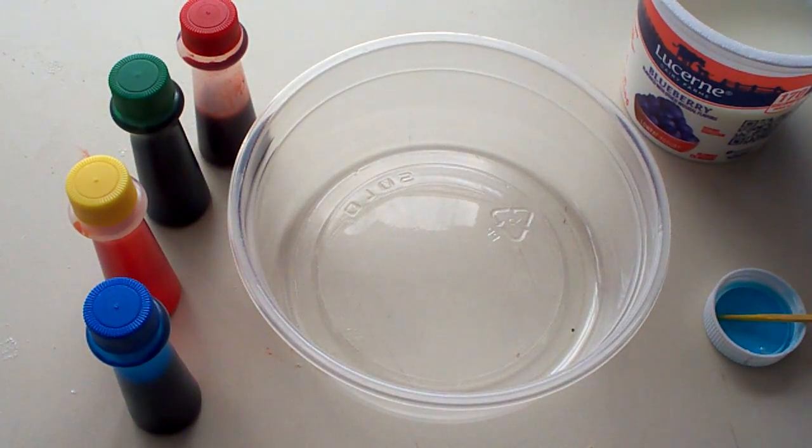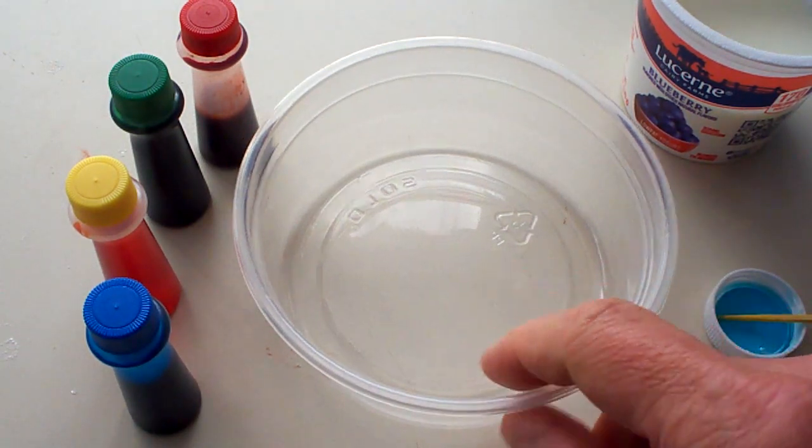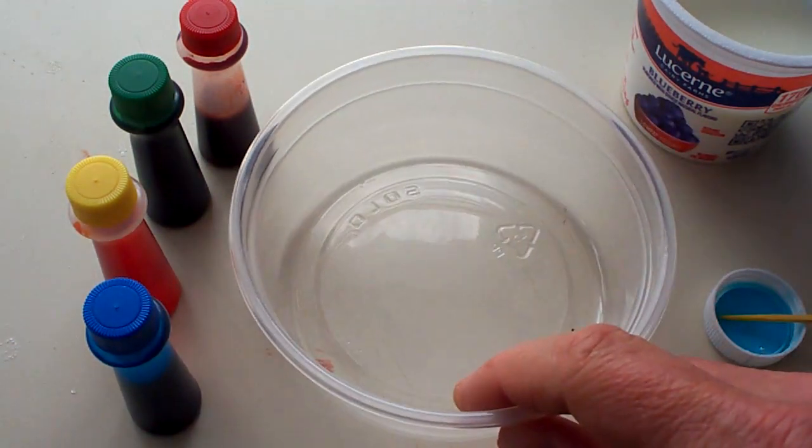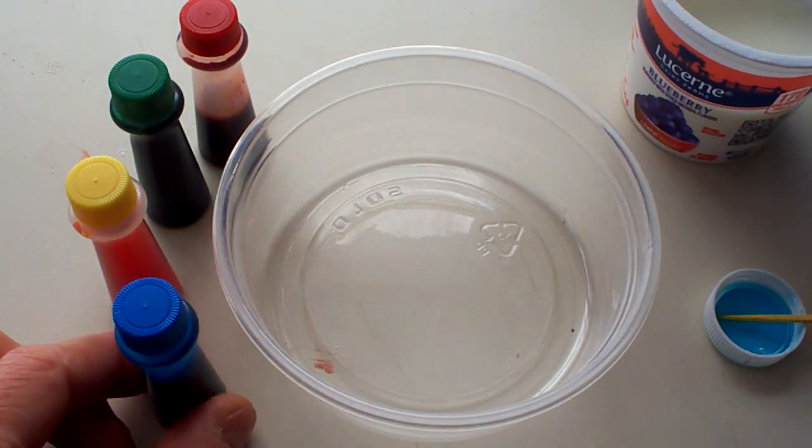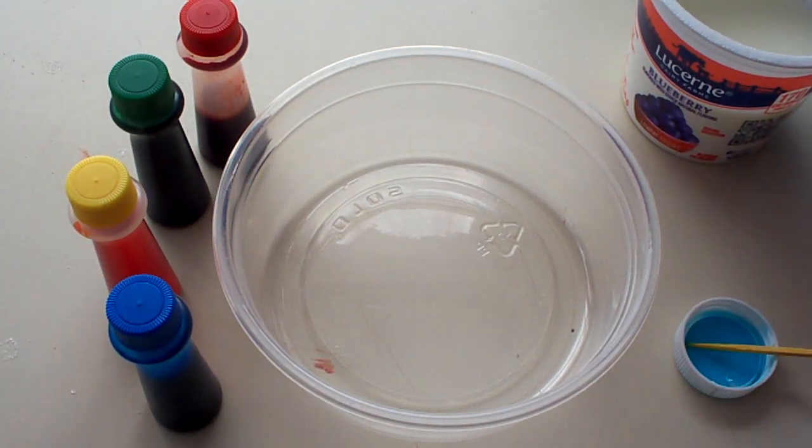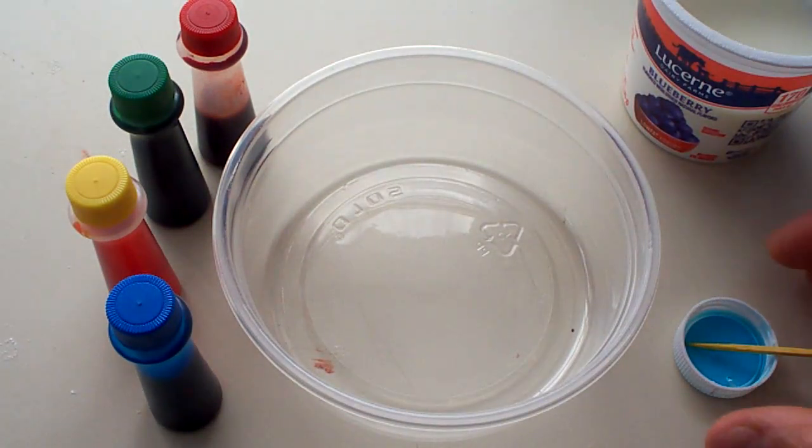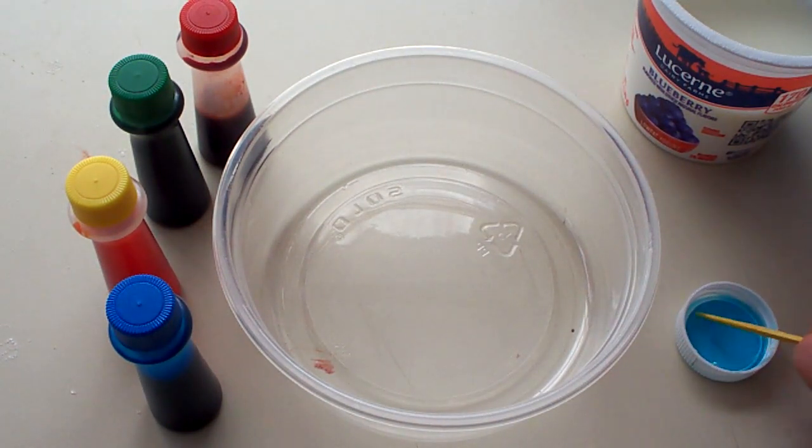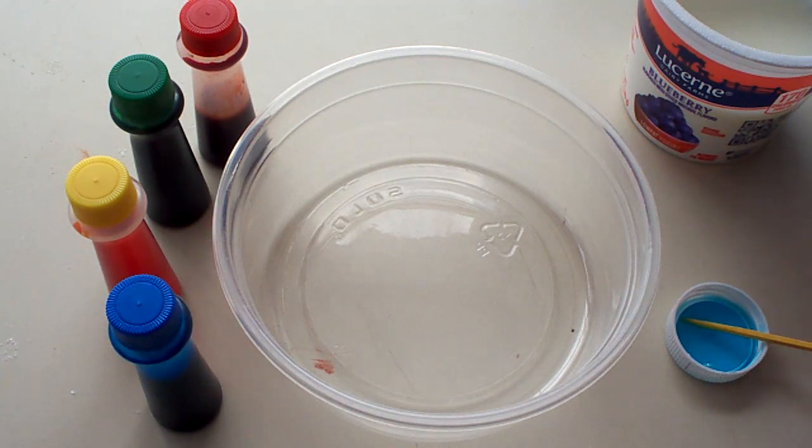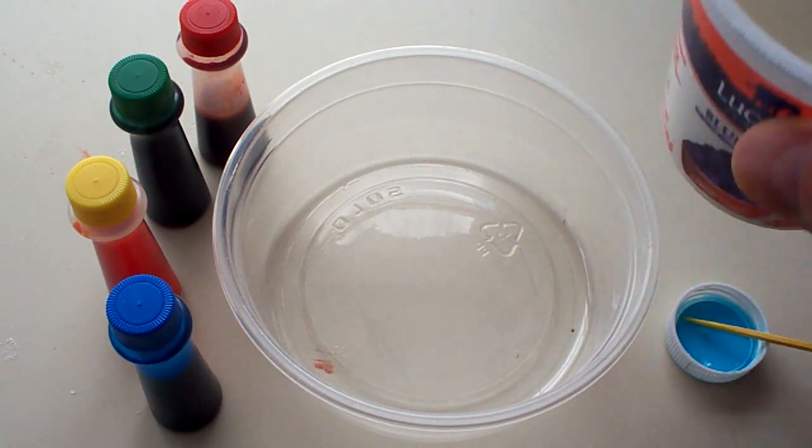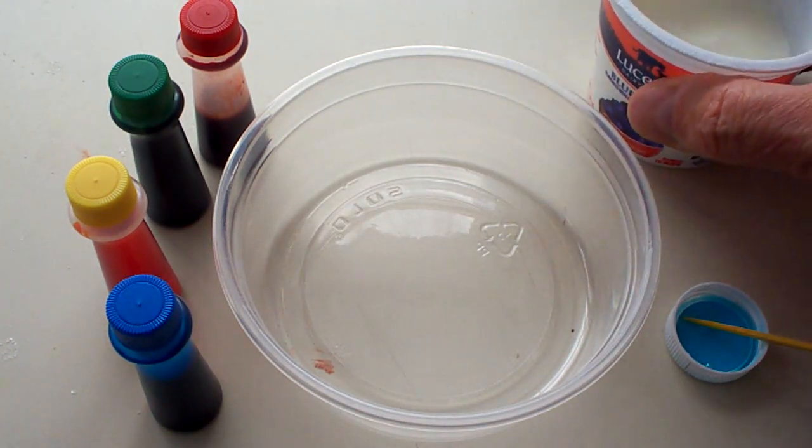Okay, we're going to show you how to do our milk fireworks activity. For this we need a shallow bowl, some food colors, dish soap (this is just Dawn dish soap), a little cup here to hold it, a toothpick, and some milk. I'm using whole milk.